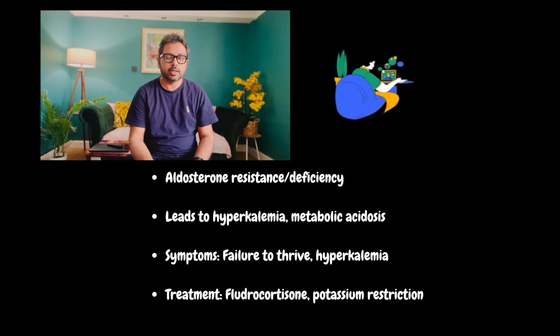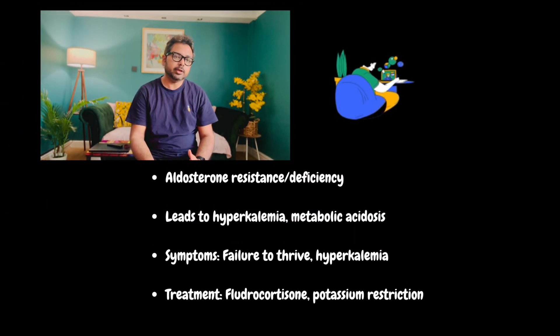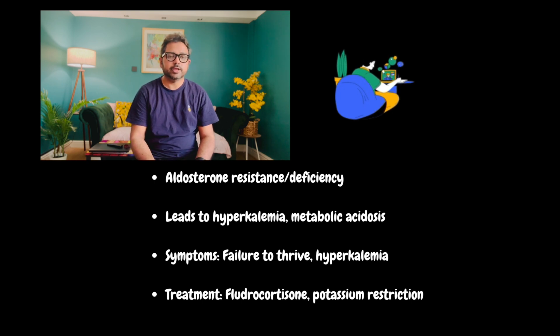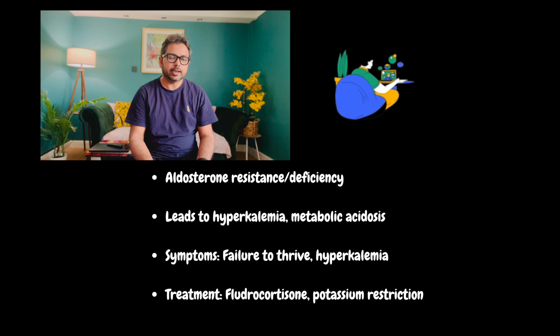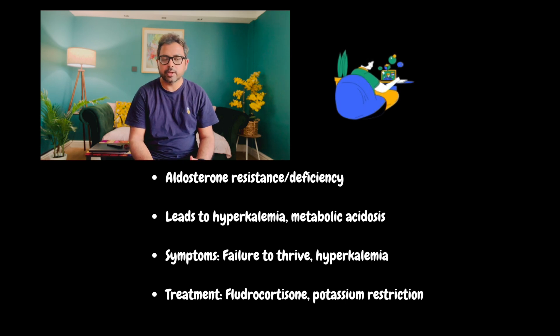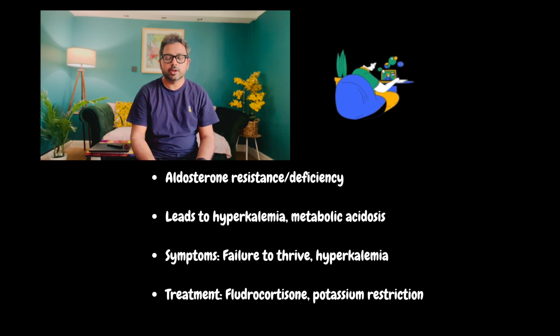The next variety of renal tubular acidosis is type 4. It is associated with hyperkalemia and it is due to aldosterone resistance or deficiency. It presents with metabolic acidosis and hyperkalemia. The symptoms are failure to thrive and hyperkalemia. Treatment is fludrocortisone and potassium restriction.